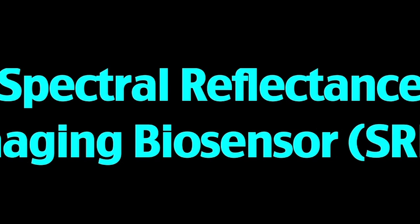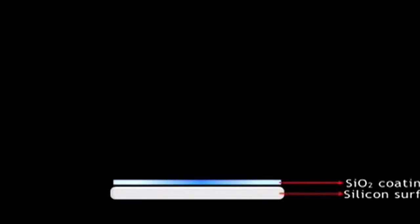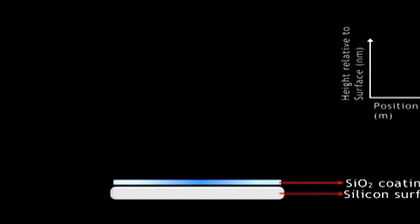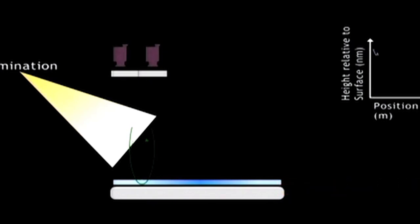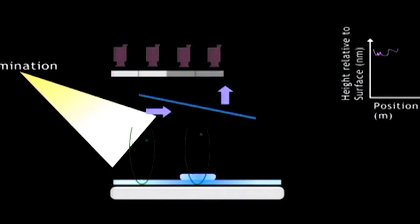Let us see this animation to further understand the principle of SRIB — spectral reflectance imaging biosensor. In SRIB technique, a silicon dioxide coated silicon surface is functionalized with biomolecules of interest. The magnitude of total reflected light at a particular wavelength depends entirely on the optical path sense difference or OPD between the top surface and the silicon dioxide silicon interface. As you can see in this animation, when the biomolecules are printed at different depth, that difference in the optical path difference is measured on the silicon dioxide and silicon surface.